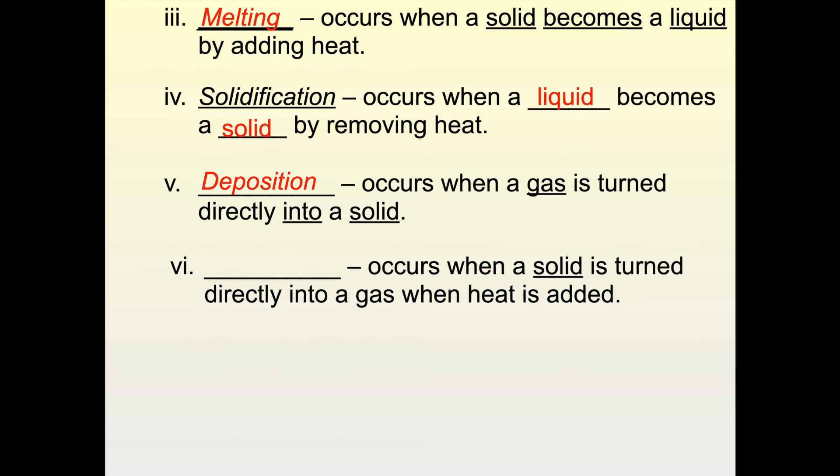And our last one is the opposite of that. It's a solid changing into a gas when heat is added. And that's called sublimation. That can happen with things like if you've ever seen dry ice before. Dry ice is solid carbon dioxide. When you bring that solid carbon dioxide into the room, it really wants to be a gas right away because in room temperatures carbon dioxide is a gas. So it'll jump past that liquid stage. There's no liquid carbon dioxide and it goes straight into a gas. So that would be an example of sublimation.